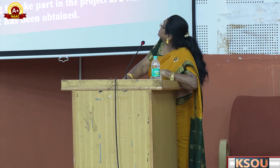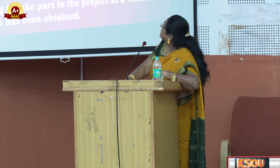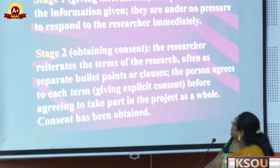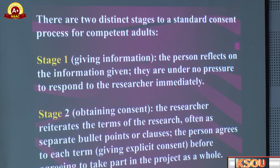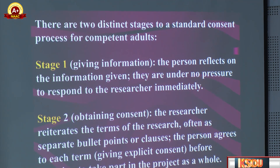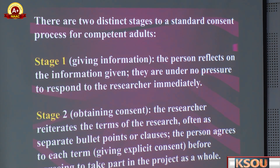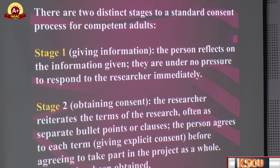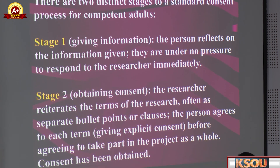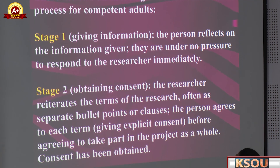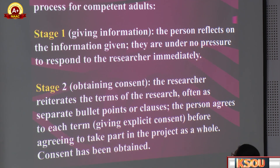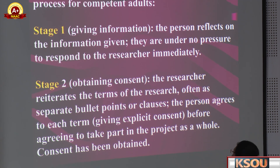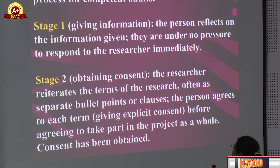There are two distinct stages to the standard consent process. Stage one is giving information — the person reflects on the information given and is under no pressure to respond to the researcher immediately. Stage two is obtaining consent — the researcher reiterates the terms of the research, often as separate bullet points or clauses, and the person agrees to each term.